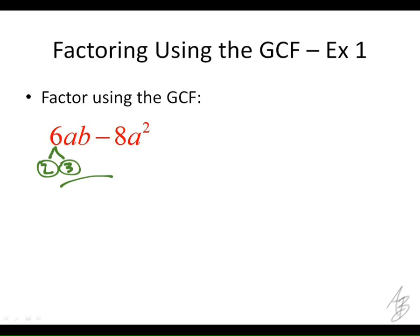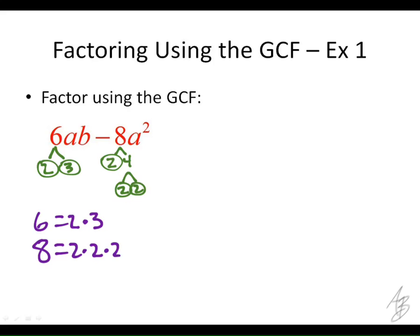What do we get for the 8? 2 times 4, and then 2 times 2. So the 6 is going to be 2 times 3, and the 8 is going to be 2 times 2 times 2. The GCF is going to be 2. Then we look at the variables — how many A's did they have in common? 1. And how many B's did they have in common? None. So our GCF is going to be 2A.